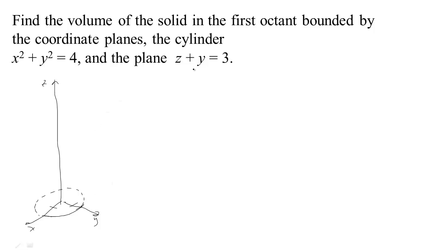We also have this plane z plus y equals 3. This plane is independent of x, so it looks the same everywhere. Let me just look at it here in the yz plane. When y is equal to 0, then z can be 3, but by the time we get out here where y is equal to 2, we're only down this far.